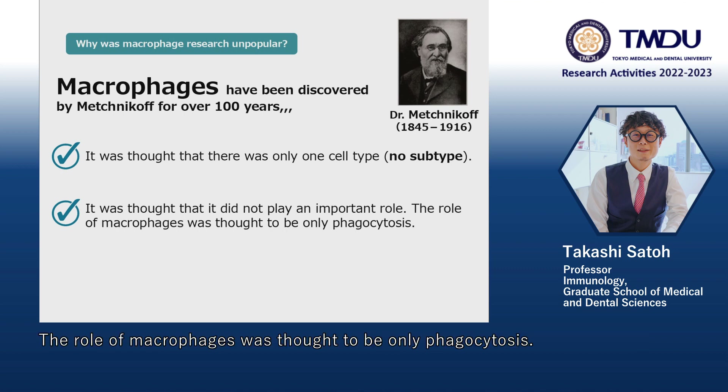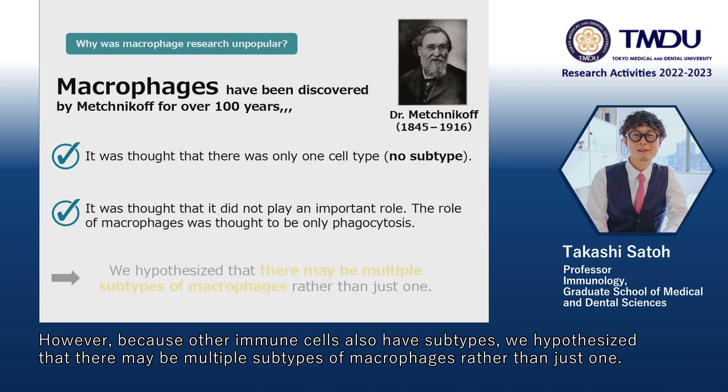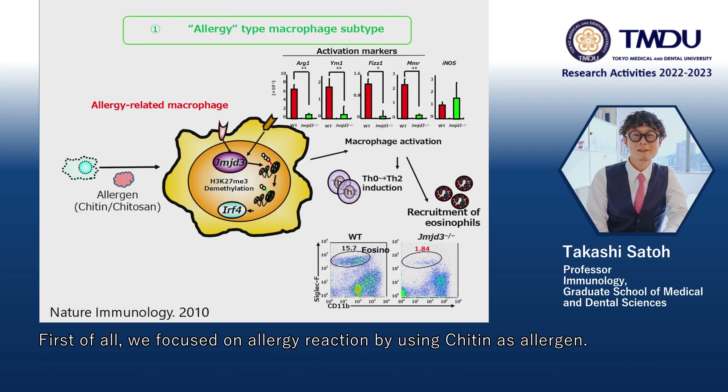The role of macrophages was thought to be only phagocytosis. However, because other immune cells also have subtypes, we hypothesized that there may be multiple subtypes of macrophages rather than just one.